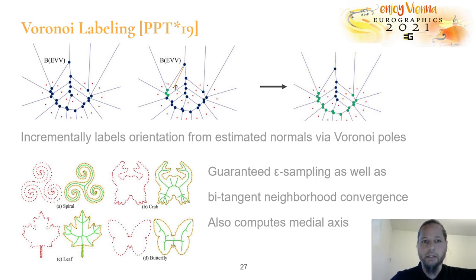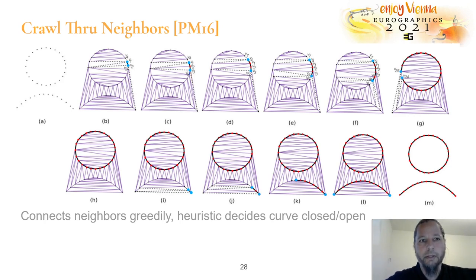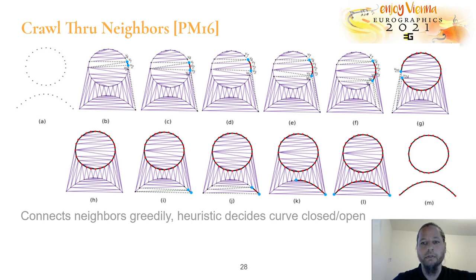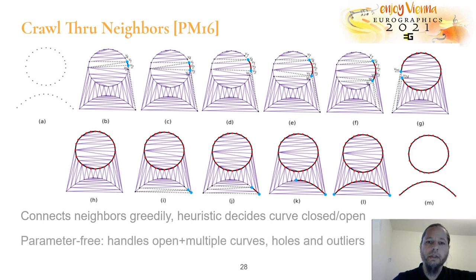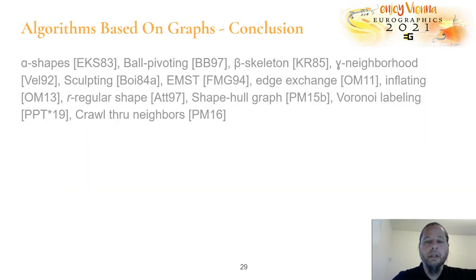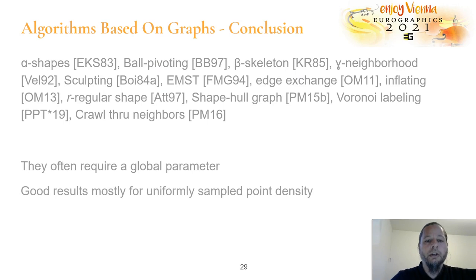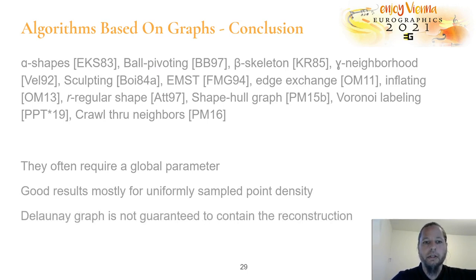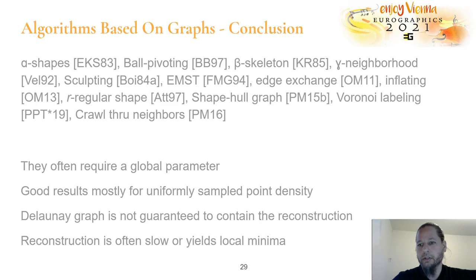The last algorithm of the graph-based category is called 2-neighbors. They connect neighbors greedily, and then a heuristic decides whether the curve is closed or open. It is a parameter-free algorithm that can handle open and multiple curves, even holes, and outliers to some extent. To conclude, graph-based algorithms often require a global parameter; good results are mostly for uniform sampling; the Delaunay graph is not always guaranteed to contain the reconstruction; and it's often slow or prone to local minima, so we don't get the optimal result we want.